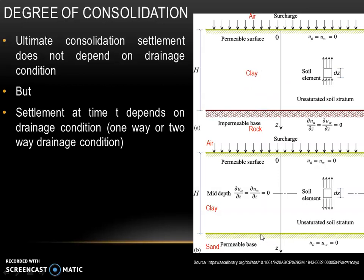In the second figure, there are permeable surfaces on both bottom and top. On the bottom there is a sand surface and on top it can be air or sand. Water travels for a length of h/2 for the top portion and h/2 for the bottom portion. So the drainage path will be h/2, and this is referred to as two-way drainage condition.